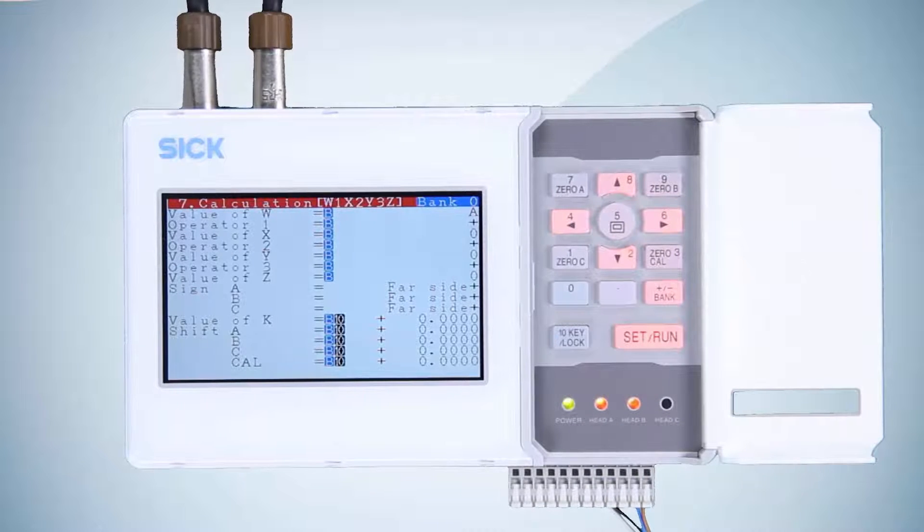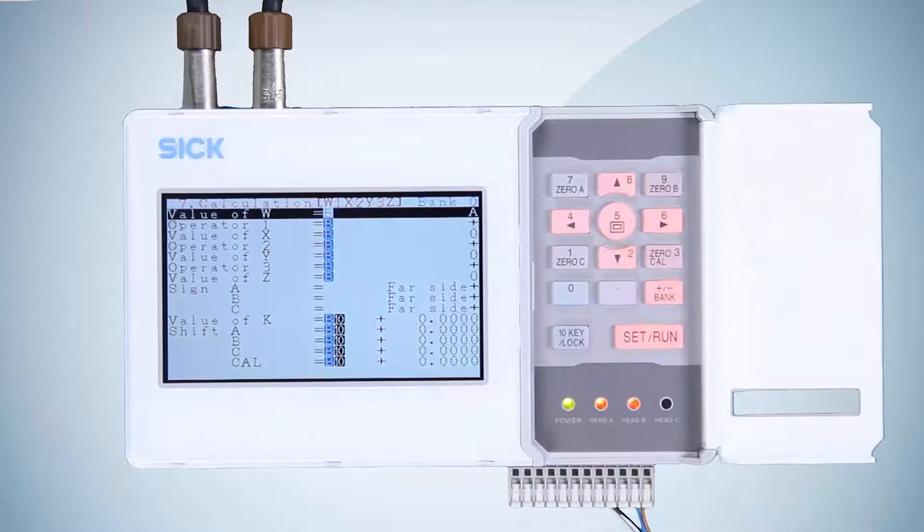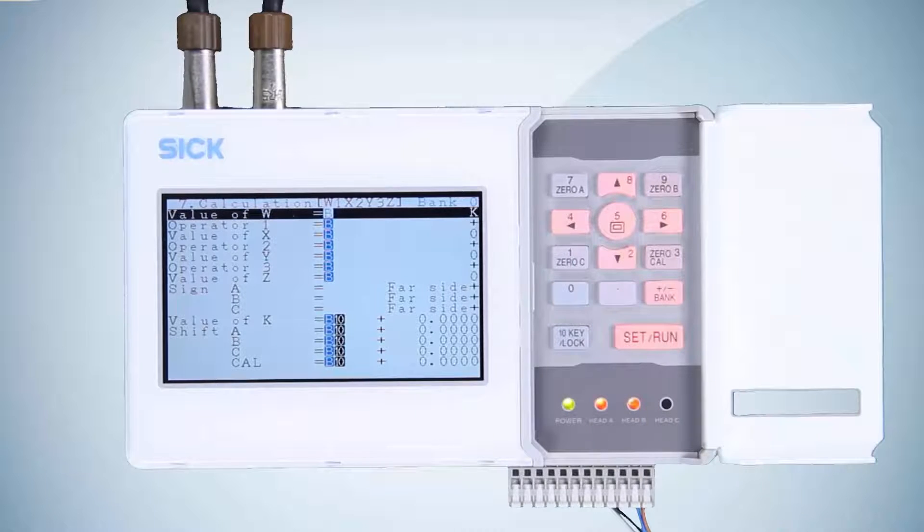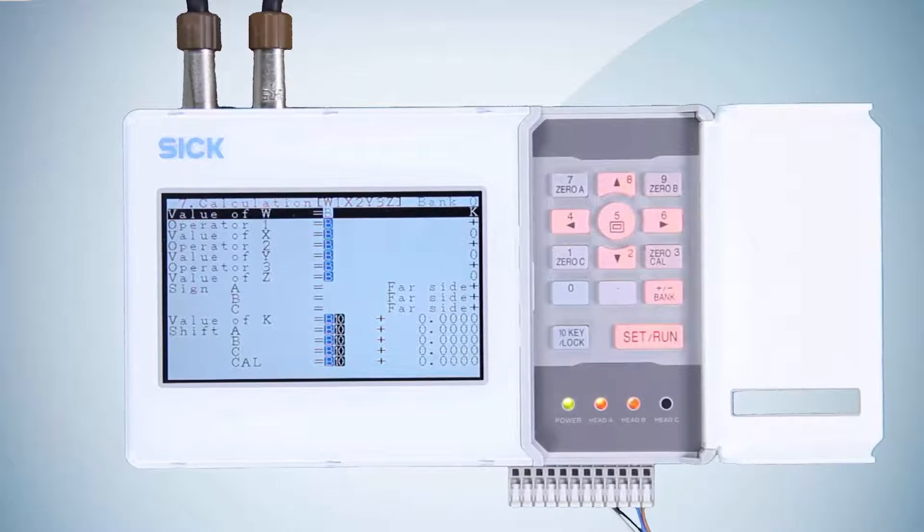Now press the number 2 pushbutton to go to value of W and set the value to K using the number 6 pushbutton. Then set the other values in the same way.